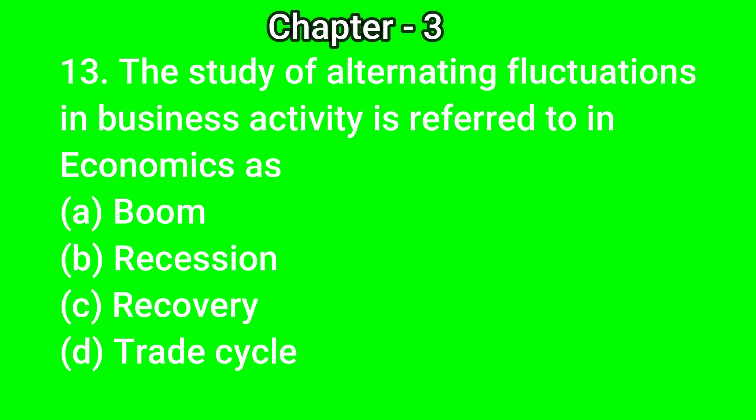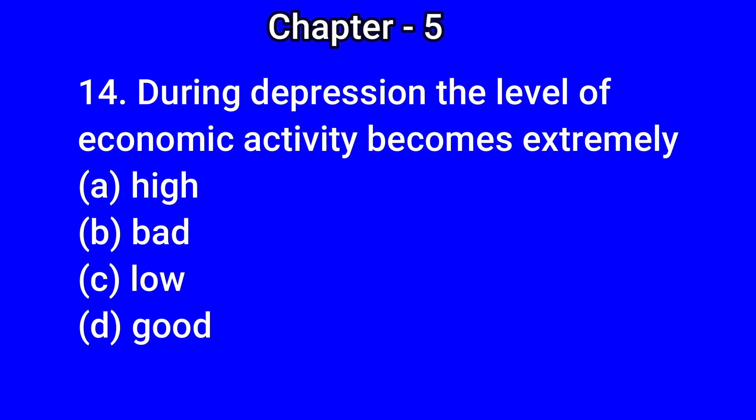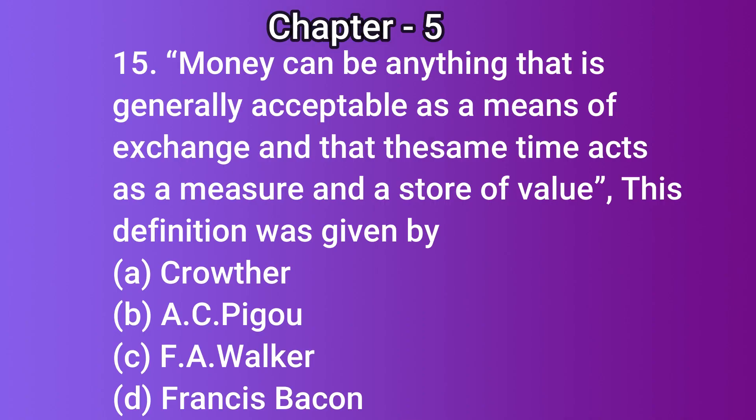Question number 13: The study of alternating fluctuations in business activity is referred to in economics as — A) boom, B) recession, C) recovery, D) trade cycle. The correct answer is D) trade cycle. Question number 14: During depression, the level of economic activity becomes extremely — A) high, B) bad, C) low, D) good. The correct answer is C) low.